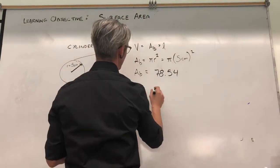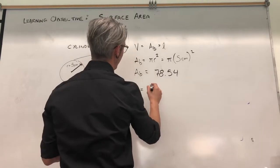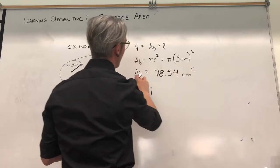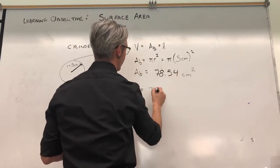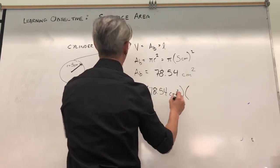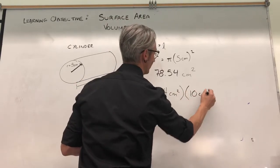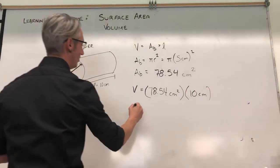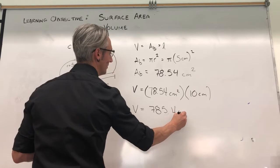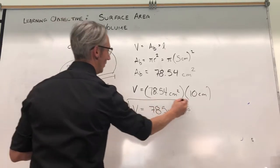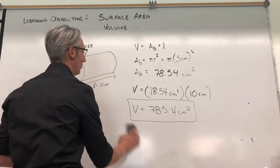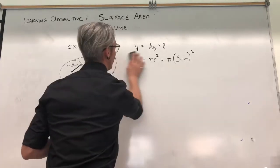The area dimensions are centimeters squared, so it's 78.54 cm² — now we multiply by how long it is: 10 centimeters. Volume equals 785.4 centimeters cubed. Pretty easy — you just need to know what to put in. Now area, which is slightly more involved.